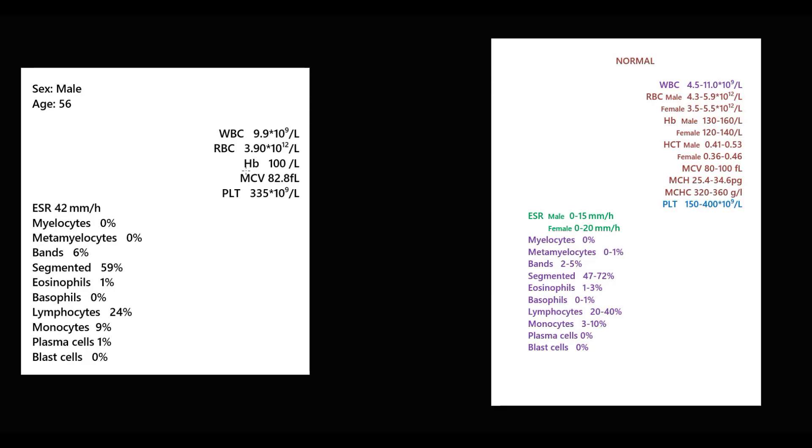The first value we're looking at is blood hemoglobin level. Hemoglobin is 100, which is lower than normal. Decreasing hemoglobin concentration we call anemia. Once we see anemia, we have to determine how severe it is and which type of anemia it is according to the size of red blood cells.